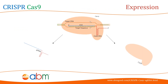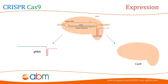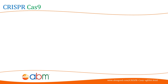Genome editing is achieved once the two components of the CRISPR-Cas9 system have been expressed in living cells. The delivery efficiency of the Cas9 endonuclease along with the gRNA directly affects the successfulness of genome editing. There are several methods to express these components in living cells, either through non-viral or viral gene delivery systems.